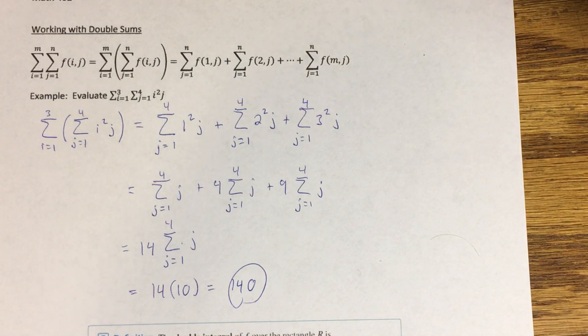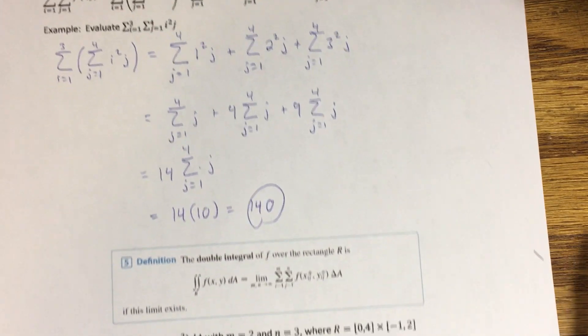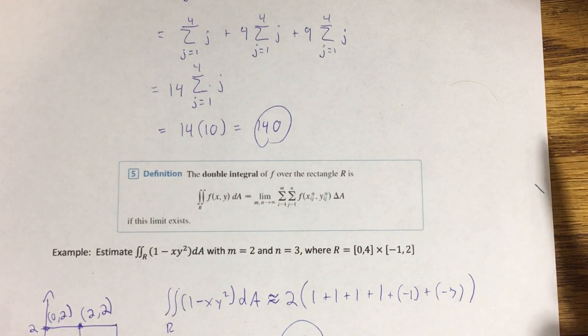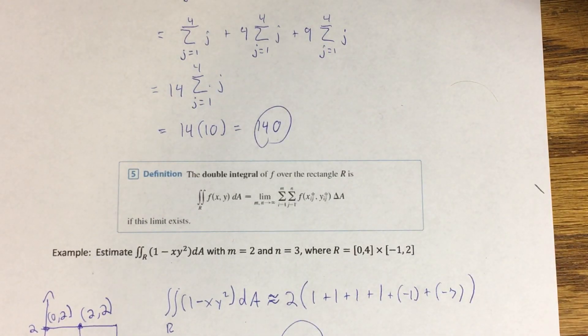So let's now go to the definition of a double integral. So using the idea of volume and the way we kind of attached to a Riemann sum to that idea and came up with an approximation for our volume.